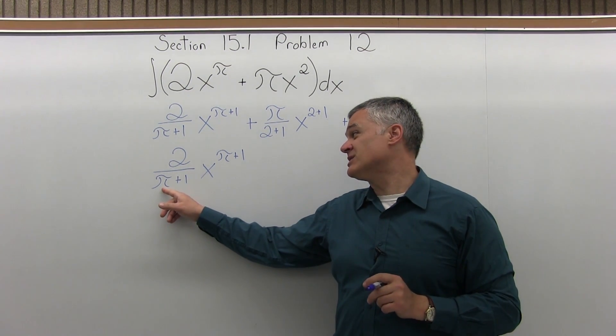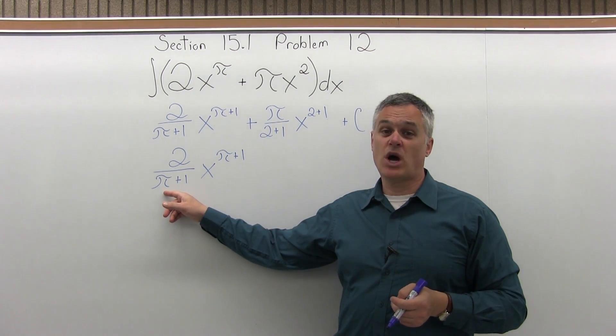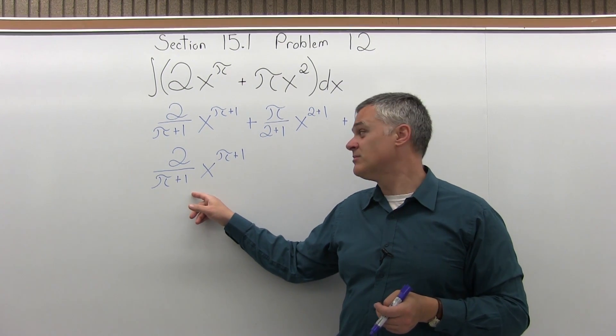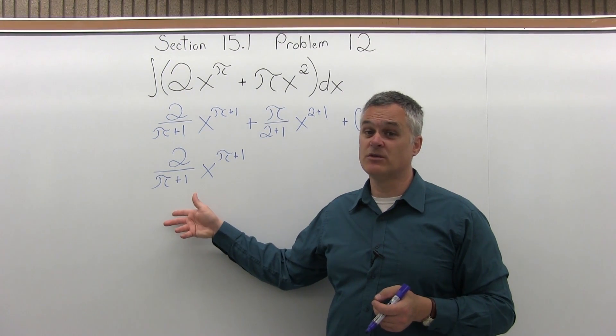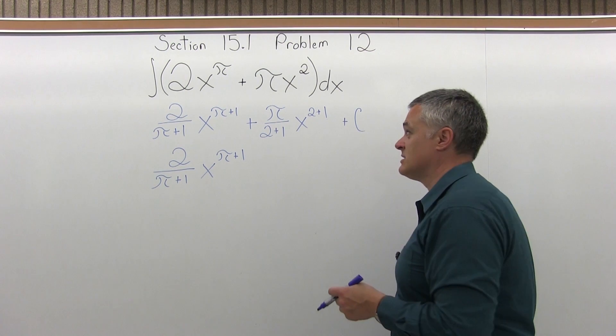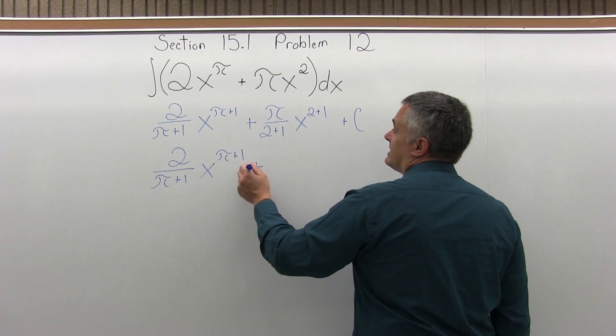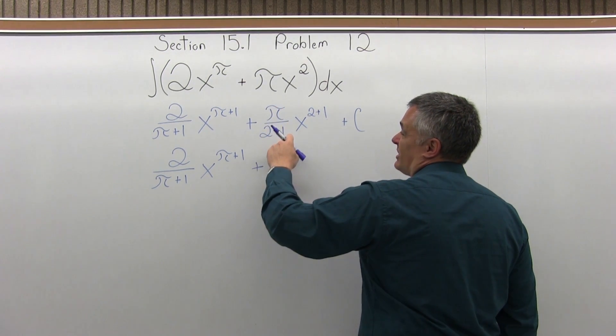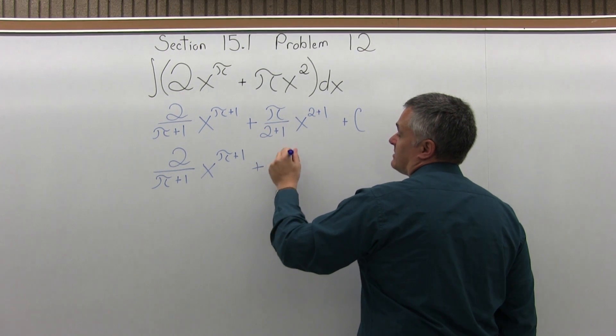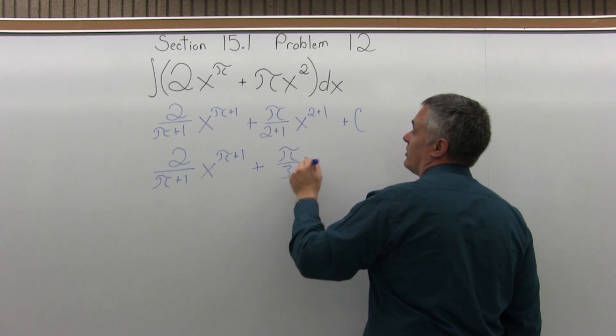You can estimate it at just 3, or 3.14 which is very common, but you can put in even more places after the decimal if you need to, 8, 10, as much accuracy as you want. The next piece though, pi over 2 plus 1, x to the 2 plus 1, we can clean that up somewhat, and call that pi over 3x to the third.